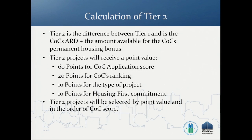Tier 2 is the difference between Tier 1 and the total amount of assistance a COC is eligible to receive, including both the total annual renewal demand and the 15% of final pro-rata need available for bonus. Tier 2 projects will receive a point value of up to 100 points based on four factors: 60 points based on the COC application score, 20 points for how the COC ranks the project, 10 points for the type of project, and 10 points for whether they commit to using a Housing First approach. Tier 2 projects will be selected by point value and in the order of COC score.